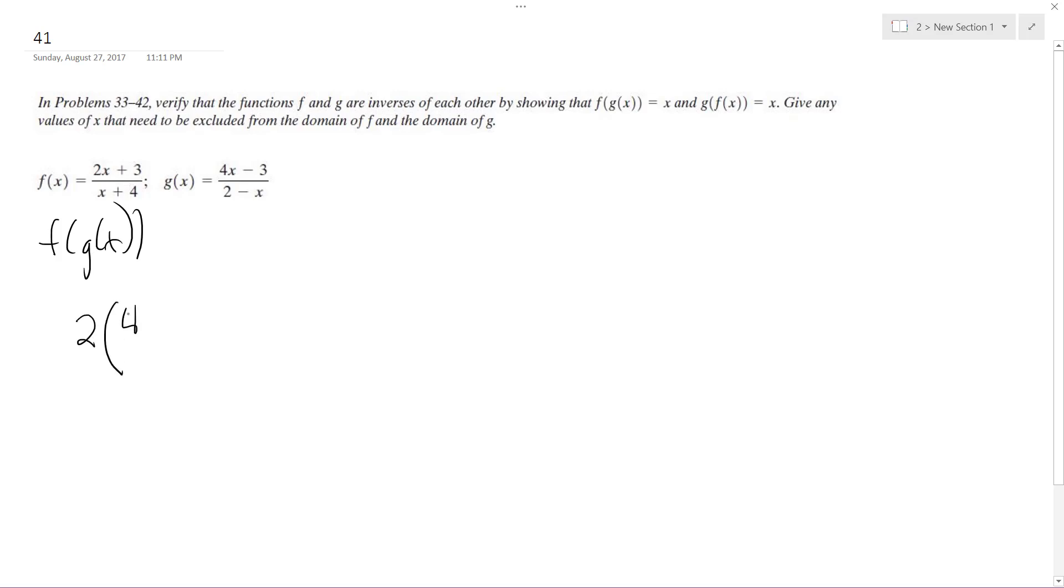This becomes plug in g of x for every x component in f of x. So we get 2 quantity 4x minus 3 over 2 minus x plus 4. So it's just common denominators. I'm going to move up here.